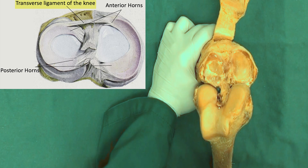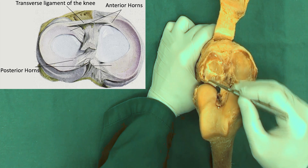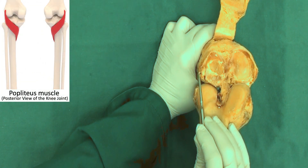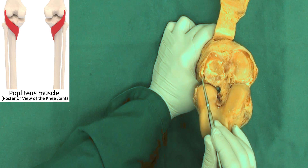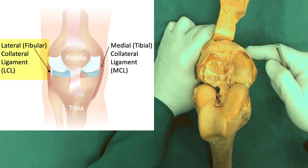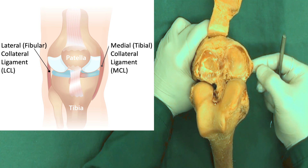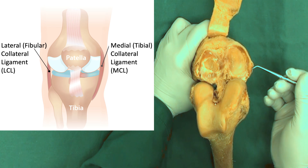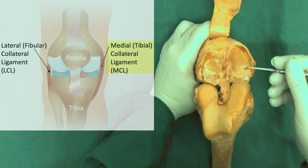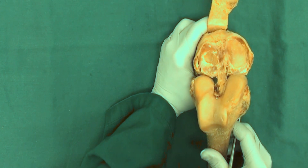Inferiorly the menisci attach to the condyles. On the peripheral side, the lateral meniscus is separated from the joint capsule by the tendon of the popliteus muscle. That is the lateral collateral ligament. On the medial side, the meniscus attaches to the joint capsule, and that is the thickening of the joint capsule known as the medial collateral ligament. Inside the joint we also have cruciate ligaments — the joint is being opened here and the cruciate ligaments are being cut.